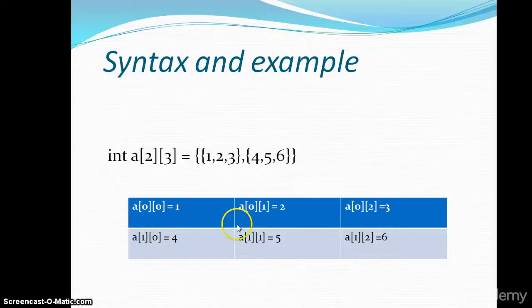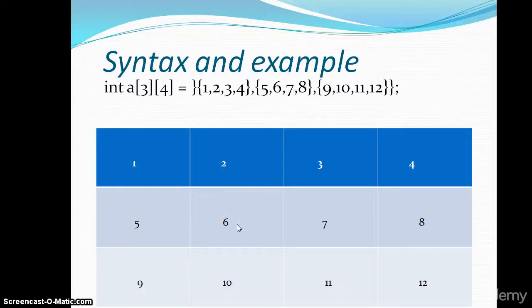Now if we write three rows and four columns and pass the values to the variables, this is how it will be stored in the memory locations of the variable.